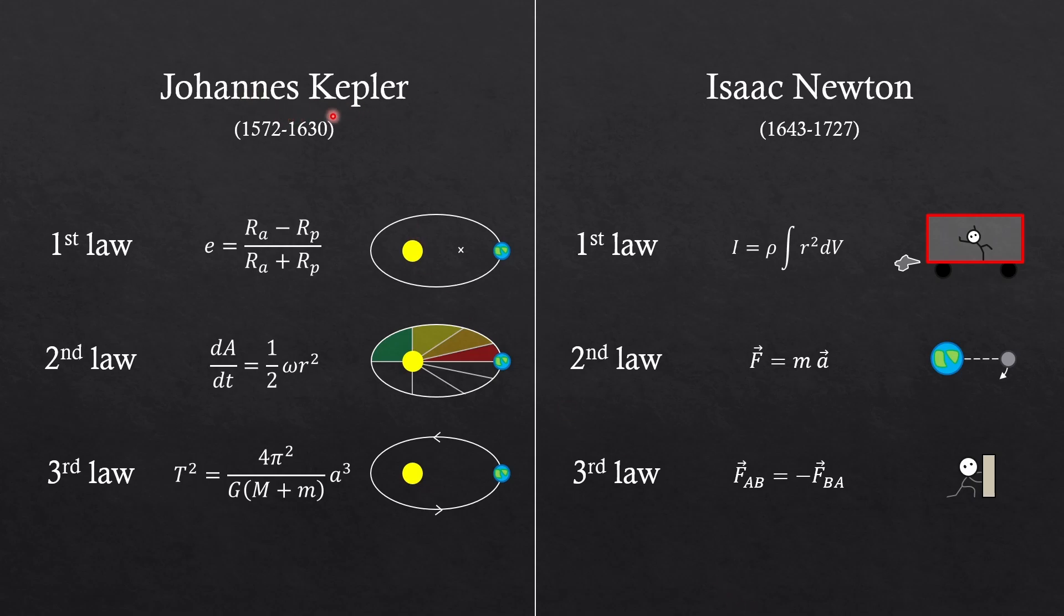As you can see from the time periods in which they lived, Newton was born after Kepler. And in fact, Isaac Newton's ideas were inspired from Kepler's ideas. Those laws are quite related. Today, we are only going to talk about Kepler's laws.